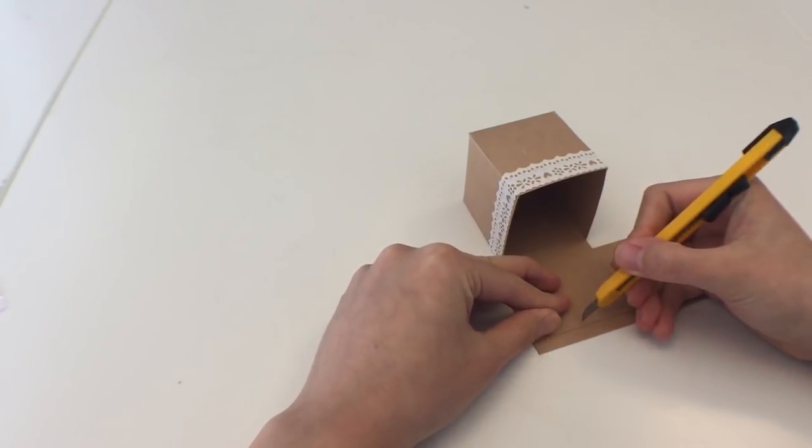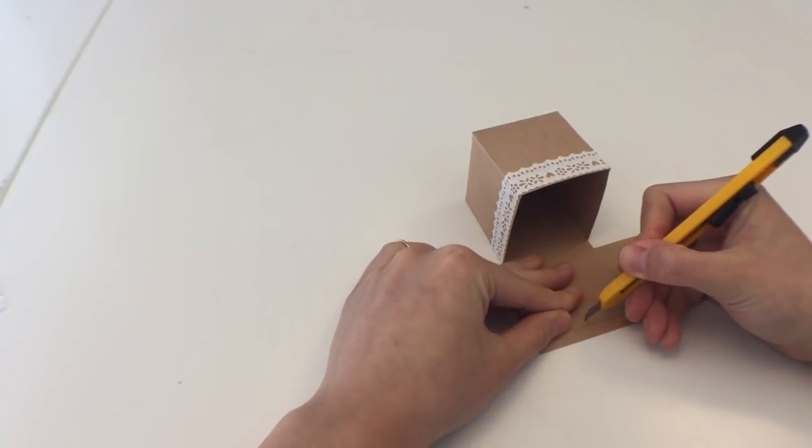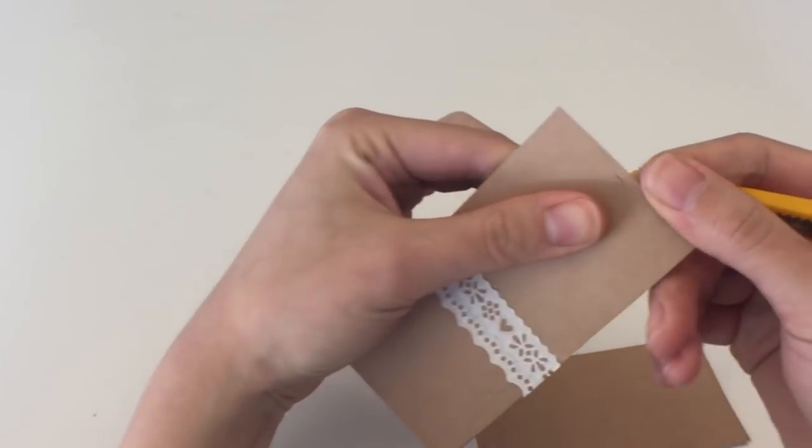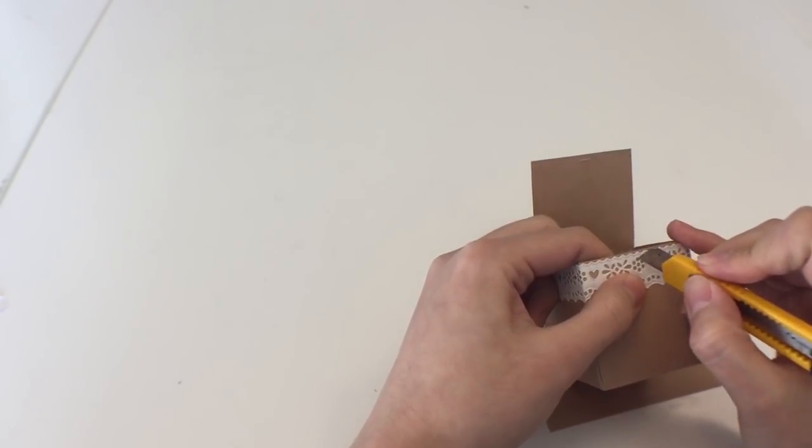And the final thing we need to do is just make a little slit on the edge of the lid and a tiny hole as well.